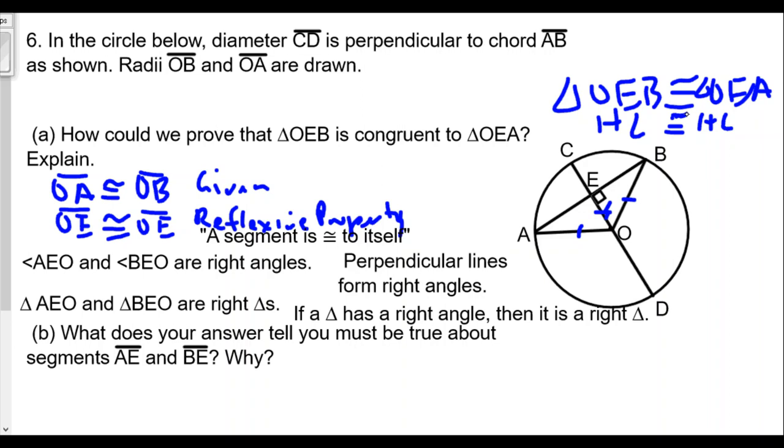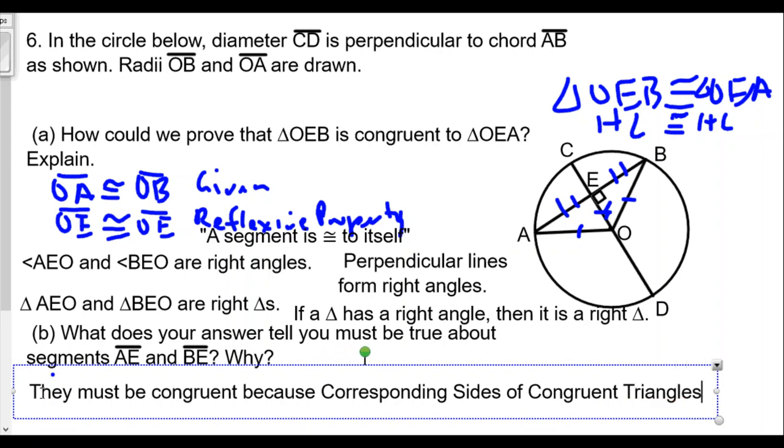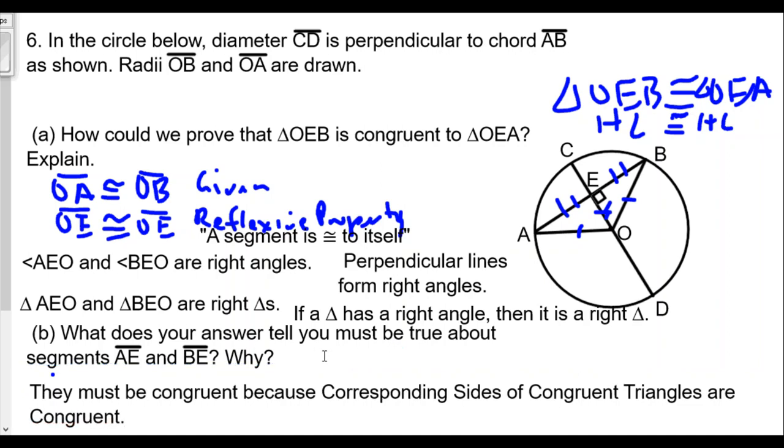So what does this tell us about segments AE and BE? Well, AE and BE must be congruent because corresponding sides of congruent triangles are congruent. All this work shows that these segments are congruent.